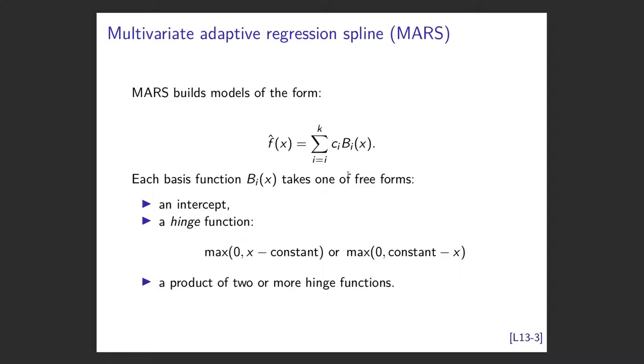So we're going to look at MARS, which is multivariate adaptive regression splines. What they do is MARS builds models of this form. So you've got your coefficient ci and you've got these basis functions. And the basis functions are of three forms. You can have an intercept, you can have a hinge function, or you can do the product of two or more hinge functions.